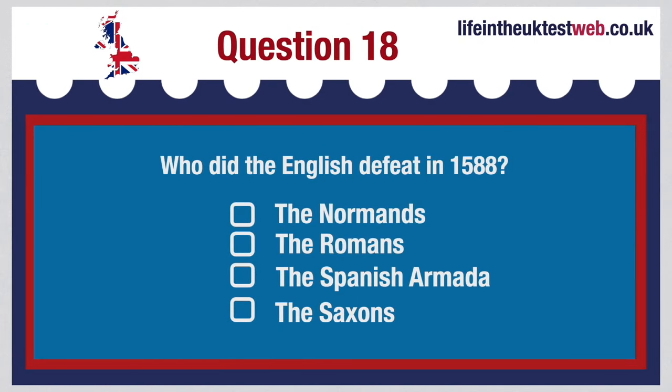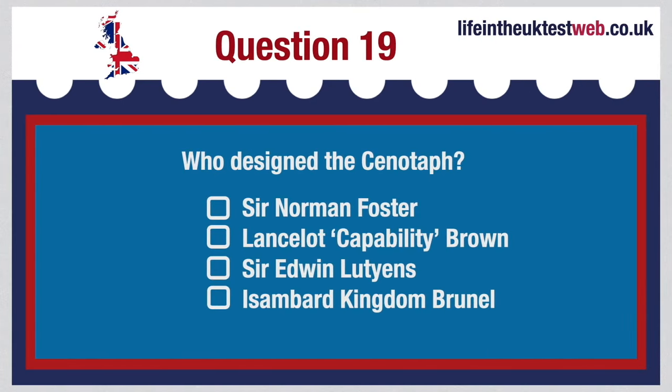Who did the English defeat in 1588? The Normans, the Romans, the Spanish Armada or the Saxons? The correct answer is: In 1588, the English defeated the Spanish Armada.